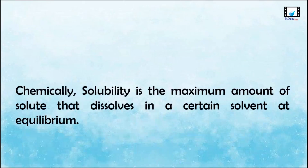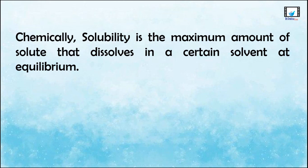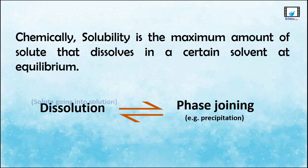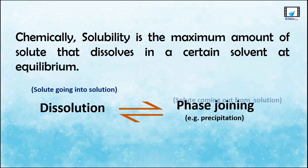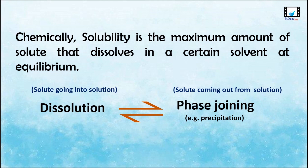So how is solubility determined? Solubility is understood chemically as the maximum amount of solute that dissolves in a certain solvent at equilibrium. Equilibrium is the state where reactants and products reach a balance — here it means that dissolution, the process of the solute going into solution, and the reverse process of the solute coming out of solution, which can be precipitation for solids, are in equilibrium.